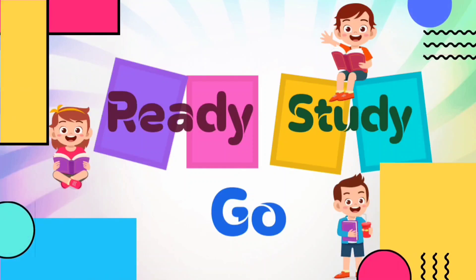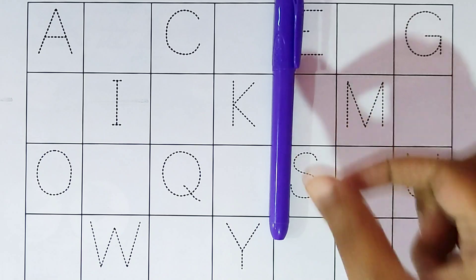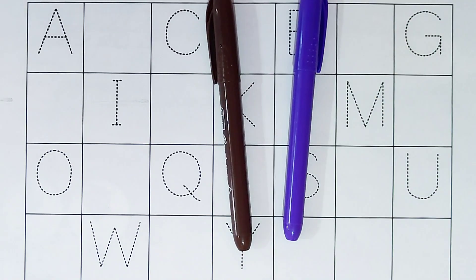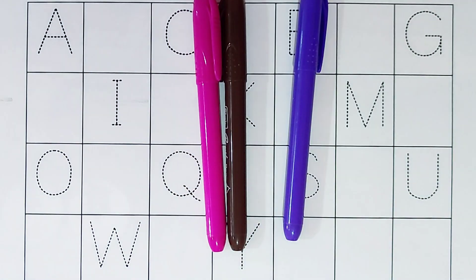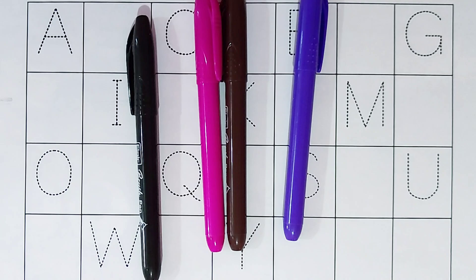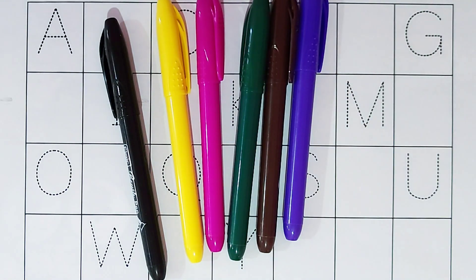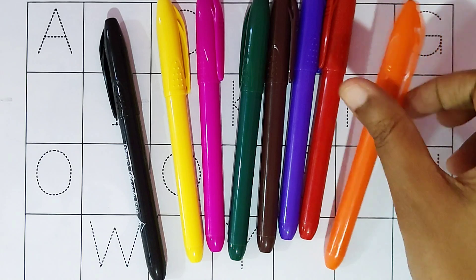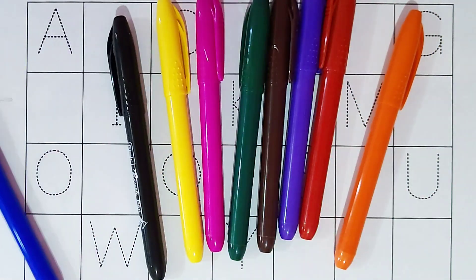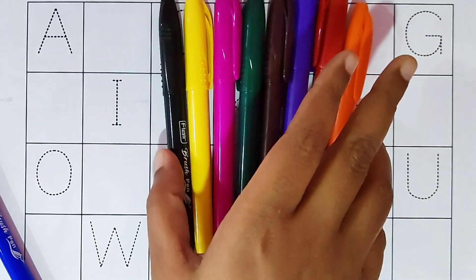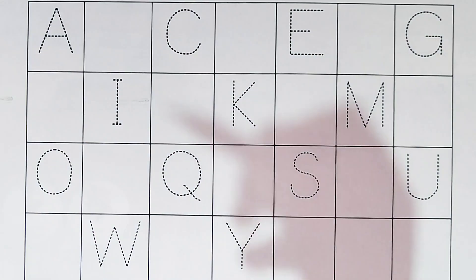Ready, study, go! Hi kids. Violet color, brown color, pink color, black color, yellow color, green color, red color, orange color, blue color. Today we can learn the alphabets from A to Z.